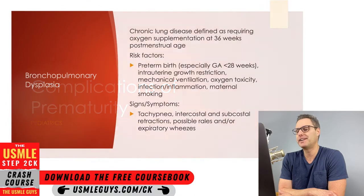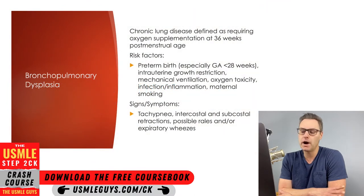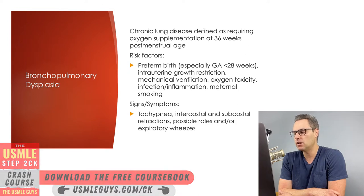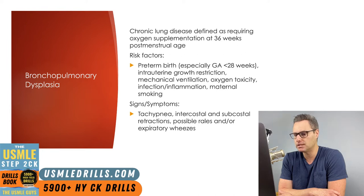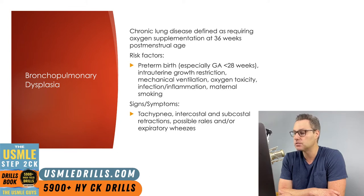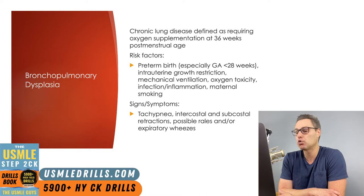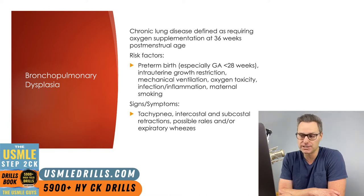First up, we've got bronchopulmonary dysplasia, which has a wide range of definitions, but it's most commonly characterized as a chronic lung disease that requires oxygen supplementation at postmenstrual age of 36 weeks. The reason why this postmenstrual age is given is because prematurity is one of the biggest risk factors for developing bronchopulmonary dysplasia, and as this is a chronic disease, it helps to differentiate it from respiratory distress syndrome, which occurs shortly after birth.